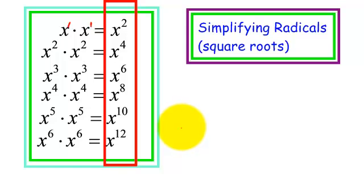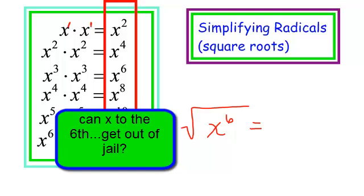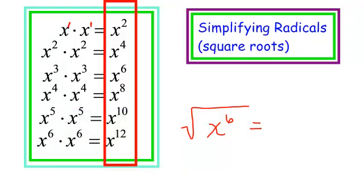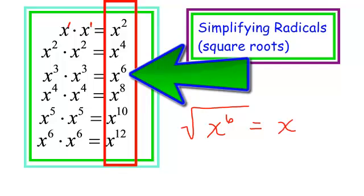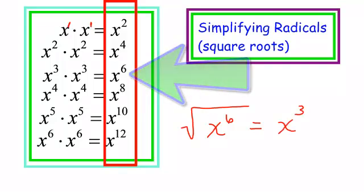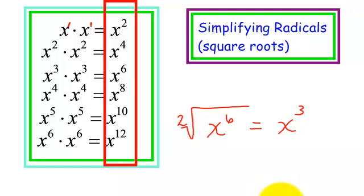If I had the square root of x to the sixth — is it perfect? Yes, because 6 is a multiple of 2. What can I multiply times itself to get x to the sixth? It will be x to the third. Notice: if I take 6 and divide it by 2, I get 3. If there is no index on the radical, I assume it's 2 — it is the square root.